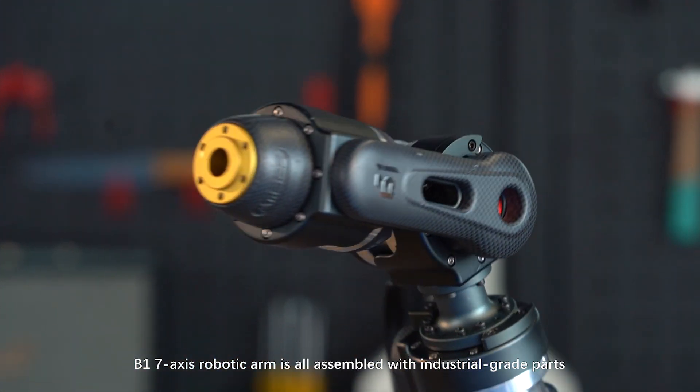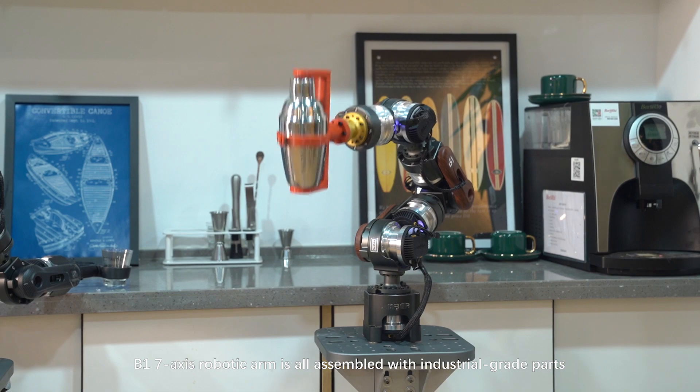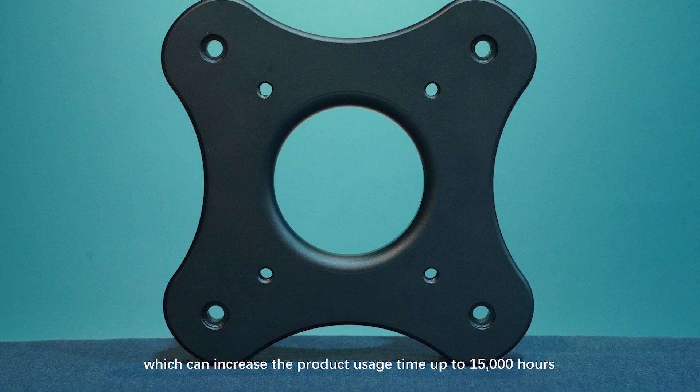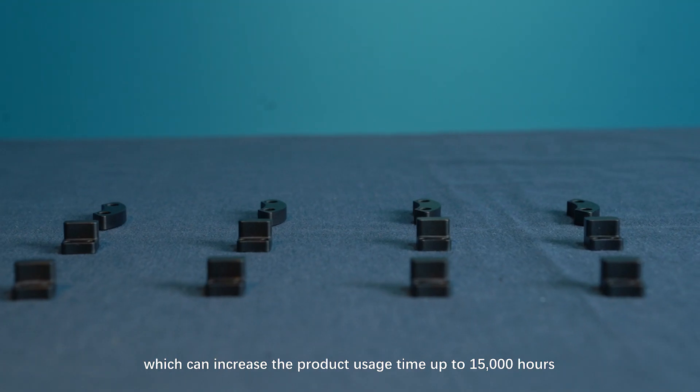B1 7-axis robotic arm is all assembled with industrial grade parts. Harmonic reducer is used, which can increase the product usage time up to 15,000 hours.